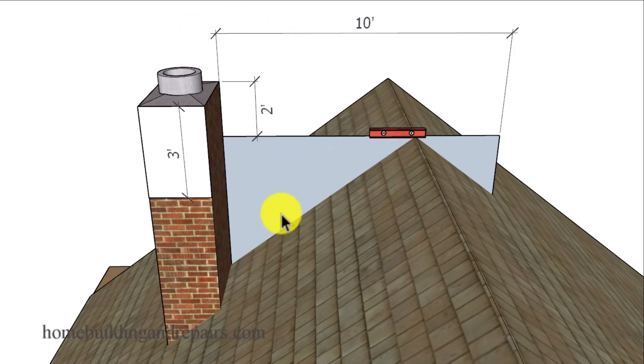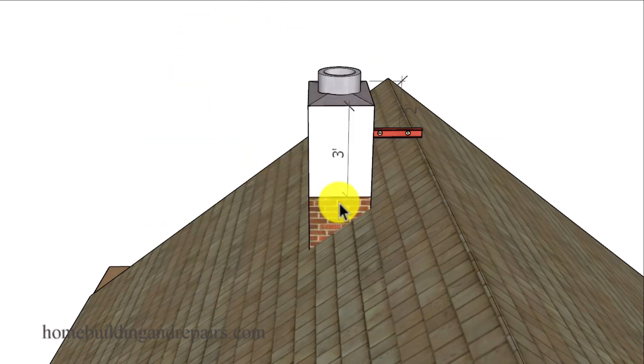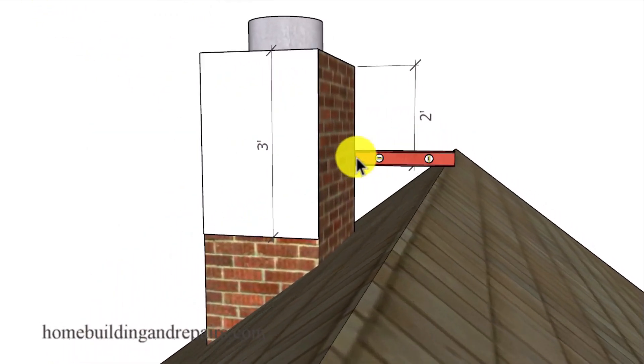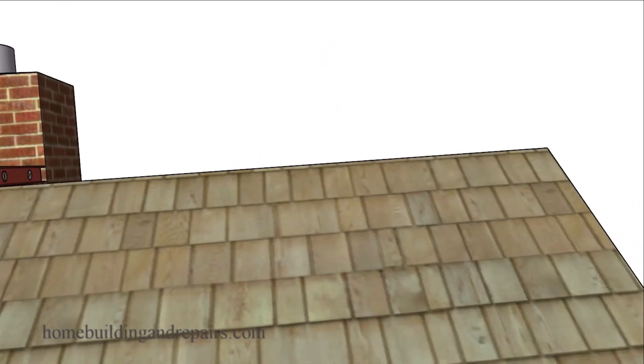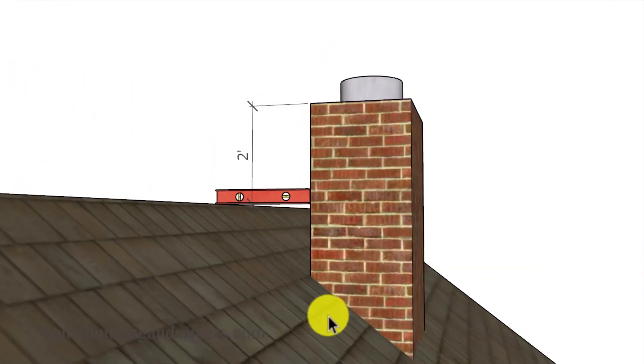So something like this you shouldn't have a problem with. And you're not going to have a problem with something like this. Again, we're two feet higher than the ridge and the chimney is taller than three feet from the highest side of the roof. Not this side, not the lowest side or the longest side of the chimney, but the highest side of the roof.